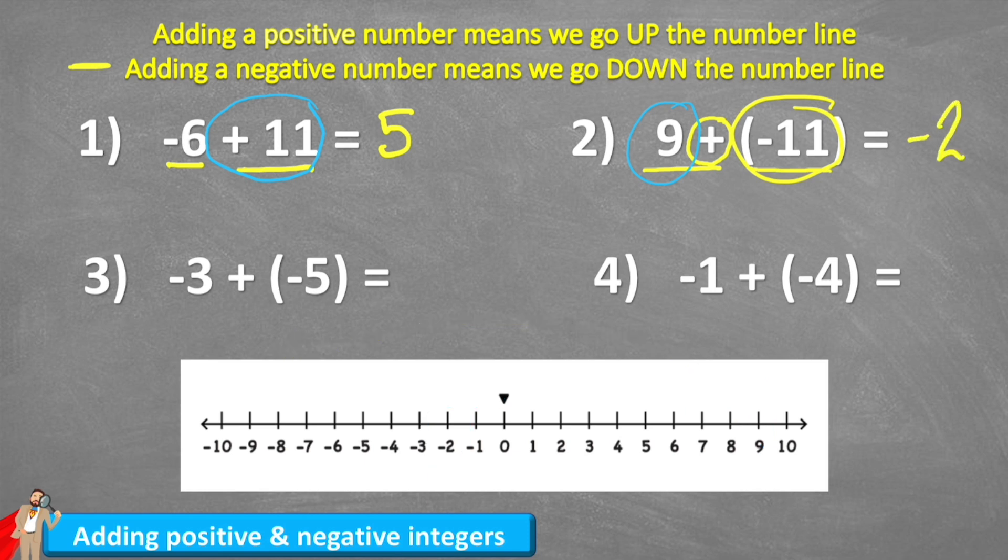Now that might be the first one that throws us off a little bit, but the way to think of it is we originally had nine and then someone gave me, they added a negative 11. So I had nine and then someone gave me a negative 11. So essentially they gave me a debt. I now owed them negative 11 and I only had nine. So I gave them all my nine and then I still owe them negative two. Okay.